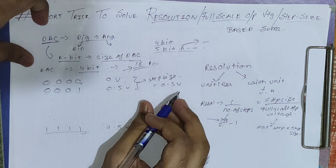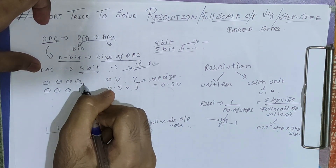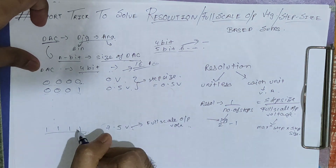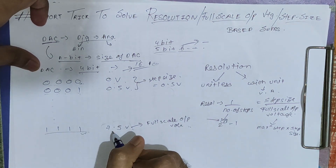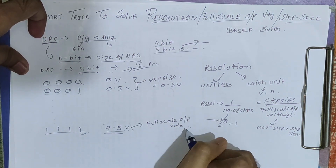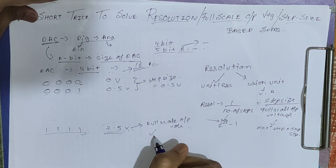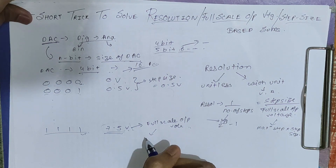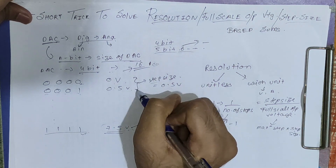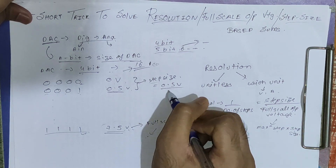For example, if this DAC gives 0V output for the 0000 input combination, 0.5V for the 0001 combination, and suppose 7.5V for the 1111 combination, then 7.5V will be the full-scale output voltage. The definition of full-scale output voltage is the maximum output voltage driven by the DAC. And step size is basically the change in voltage from one step to another — so here the change is 0.5V, meaning the step size is 0.5V.